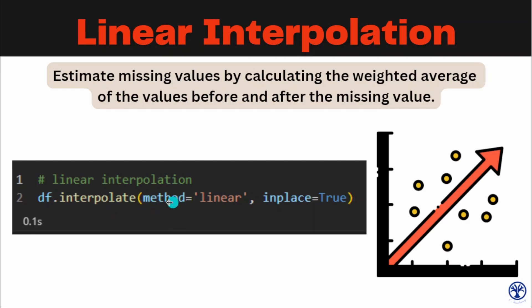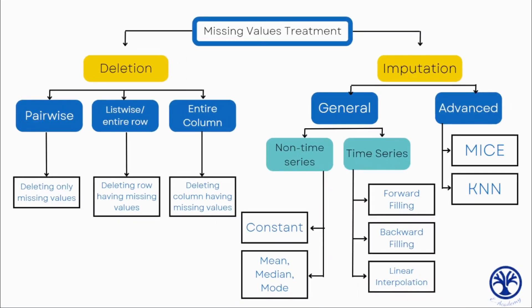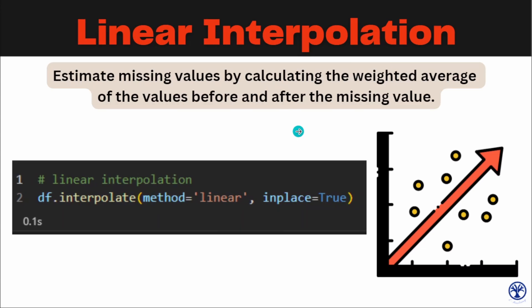These are the three techniques we can use when we have time series data. There isn't one technique that is universally best — it really depends on the data and the question you are dealing with, so you must try different approaches to see which works for you. In the next video we will be looking at advanced techniques for imputing missing values. We'll meet in the next video — till then, take care, goodbye.